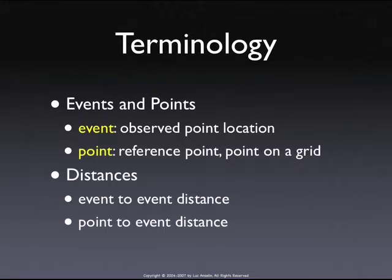In a time series context, you can think of how many light bulbs blow per month, which is like a quadrat count — you take the month and count how many light bulbs blow out. Or you can measure the time from one light bulb blowing up to the next one. These are just two ways of looking at the same process. This is nothing but extending that in two dimensions, and instead of counting events in a particular area, we focus on the distances between events.